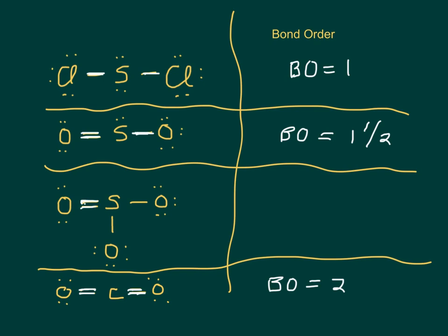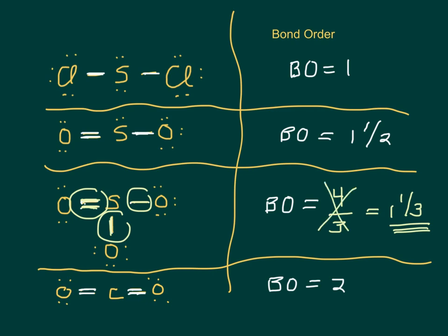For SO3, we've got a double and two single. Now, I'm not sure if it's clear to you that the average of that is one and a third. So here's a little trick that will get you the answer if you have a little trouble with the math in your head. First thing you do is you say there's a total of four lines. I've got four lines here. And it's divided amongst three places. So four-thirds or one and a third. So the bond order of SO3 is one and a third. We don't write it as four-thirds. We write it as one and a third.